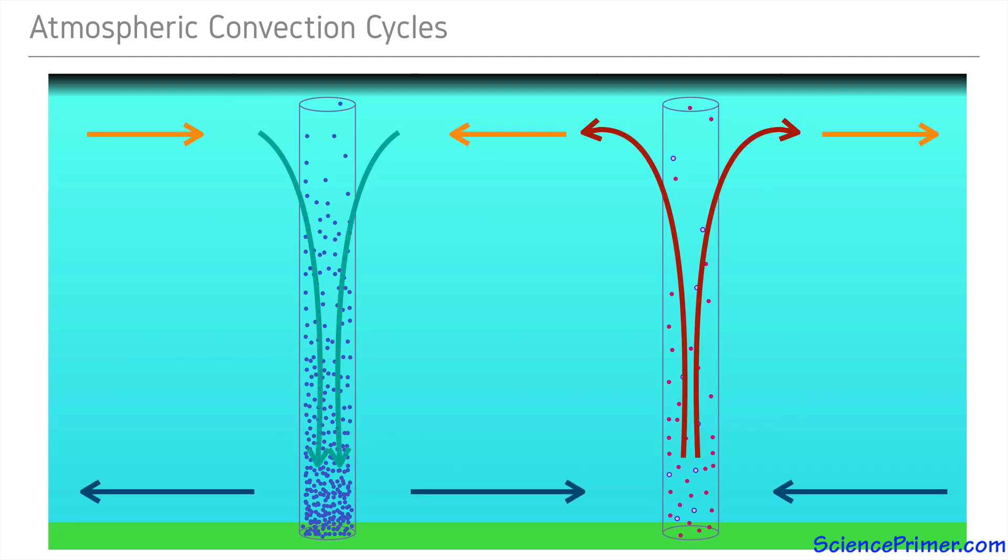The movement of air up around regions of low pressure cause air masses to converge near the ground and diverge high up in the troposphere. The opposite happens around regions of high pressure, where air currents diverge near the ground and converge in the upper atmosphere.